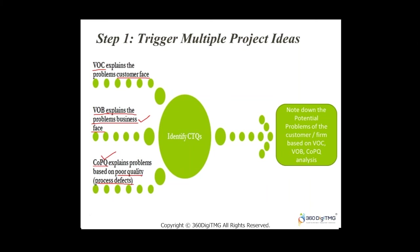Once you put together all these reasons and questions, you identify the corresponding CTQs — Critical to Quality. From there, you note down the potential problems of the customer or the organization based on Voice of Business. You might also want to look into the cost of poor quality, and from there you try to come up with what your CTQ is.